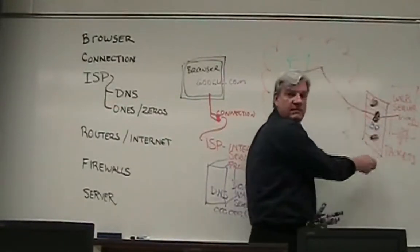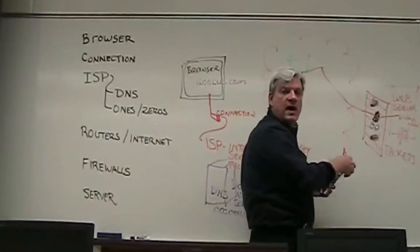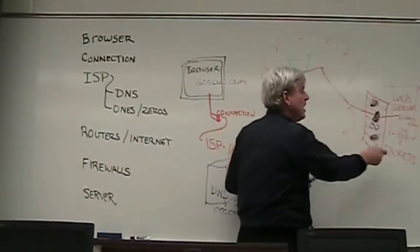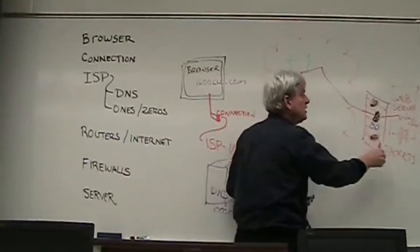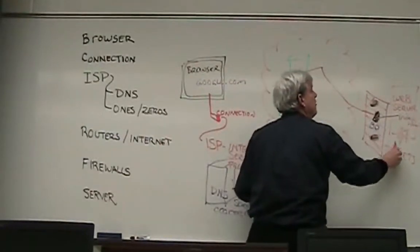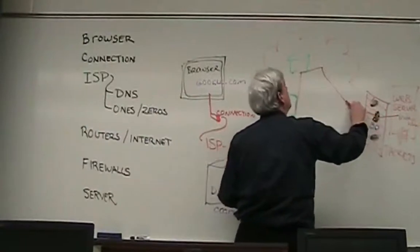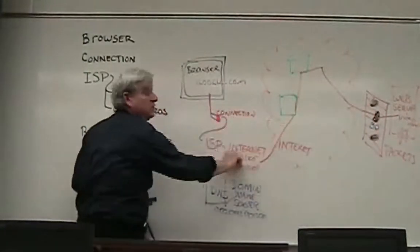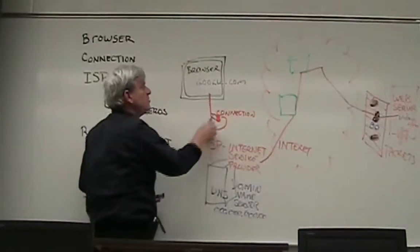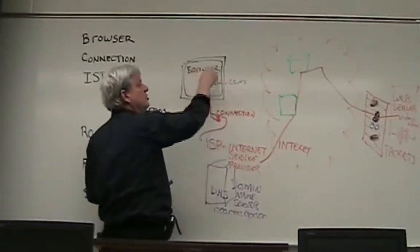And these packets have information that overlaps. So if one of the packets gets lost, or something happens to it, then the page can still be reconstructed. So these packets go back through the firewall, they go back through the systems of routers, they come back to your ISP, through your connection, they come into your browser.